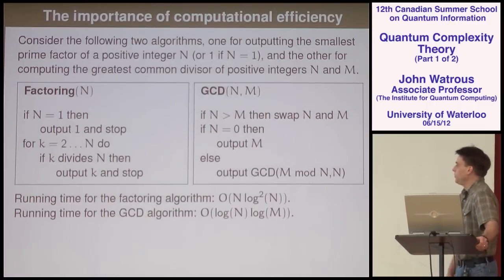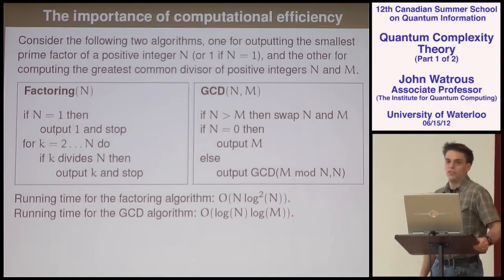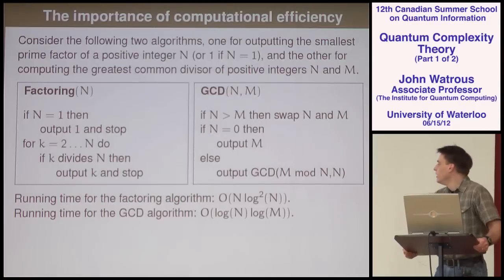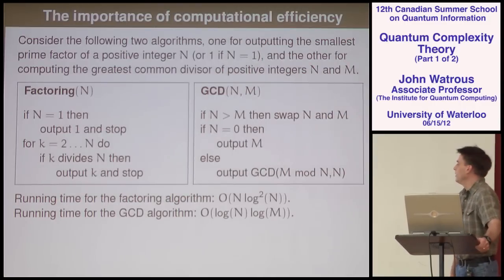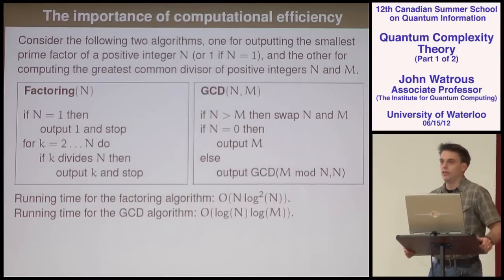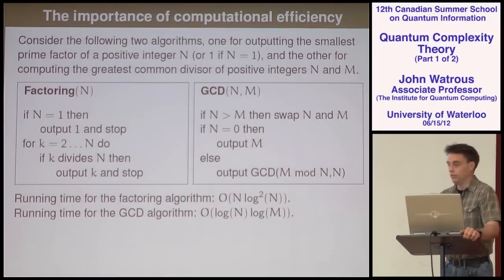The running time for the factoring algorithm is really pretty terrible — maybe on the order of N log squared N. In the worst case, N iterations of the loop, each requiring time for a division. The GCD algorithm, on the other hand, is extremely fast: order log N times log M steps. That's not obvious, but this algorithm has been analyzed very carefully and that's known to be the running time.